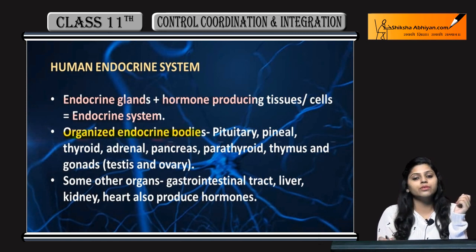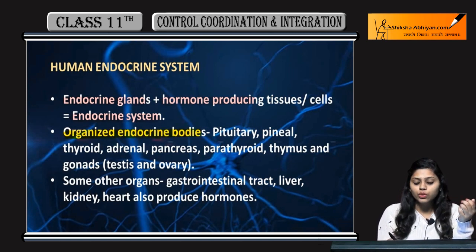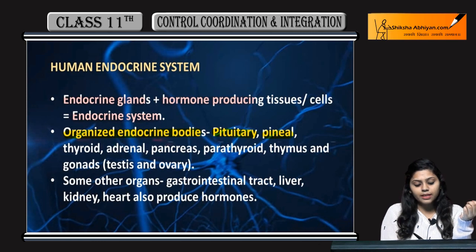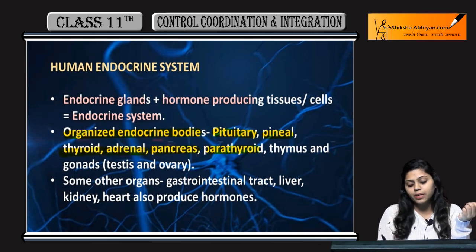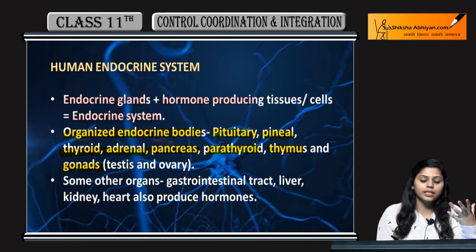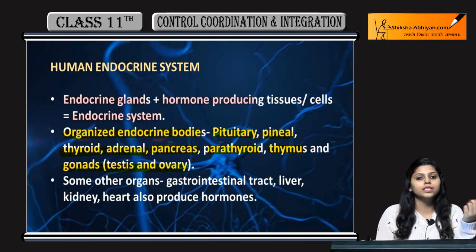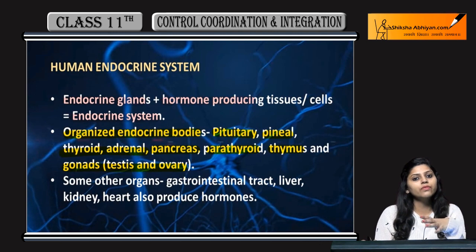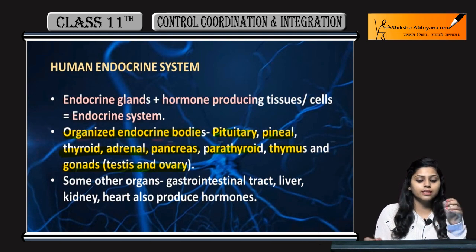The organized endocrine bodies include the pituitary gland, pineal gland, thyroid gland, adrenal gland, parathyroid, thymus, and gonads. Gonads include testes and ovaries — testes in the case of males and ovaries in the case of females.